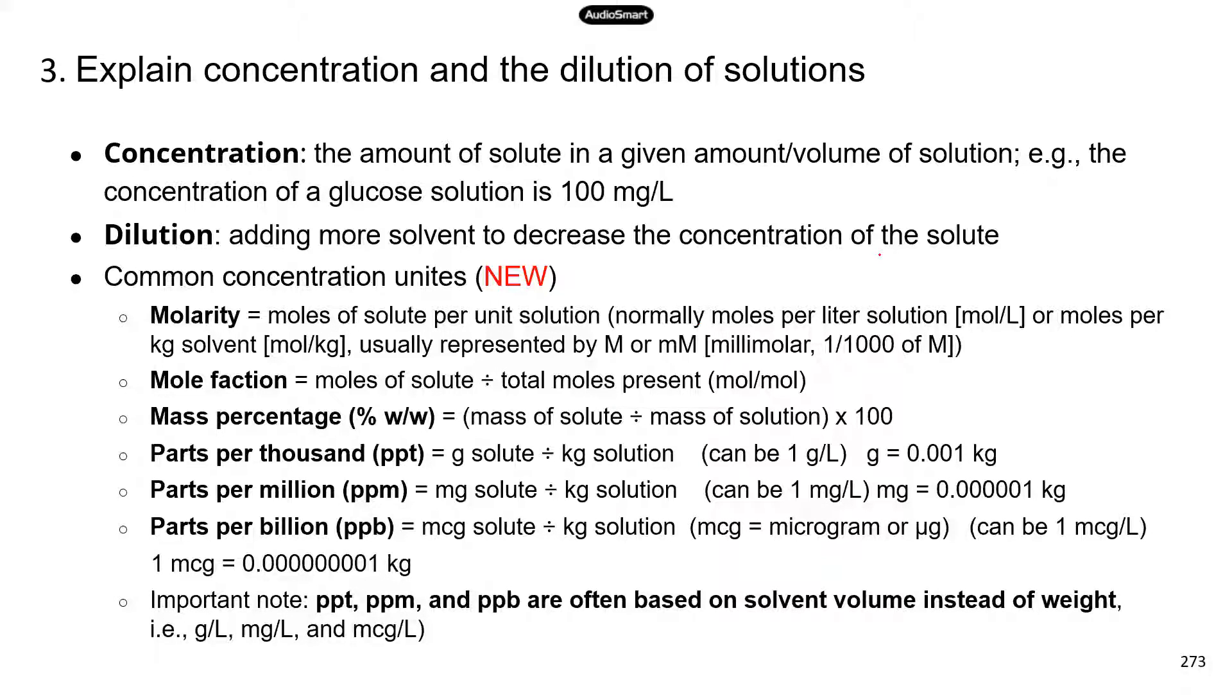At last, we're going to look at concentration and the dilution of solutions. I didn't see too much about dilution in the ATI study manual, so hopefully it's not going to get too complicated. Let's look at concentration first. Concentration refers to the amount of solute in a given amount or volume of a solution. I know that's a very long definition, but look at this example. If you have a glucose solution and the concentration is 100 mg per liter, that just means you have 100 mg glucose in a 1 liter solution. It tells you how much solute you have in a given volume of a solution.